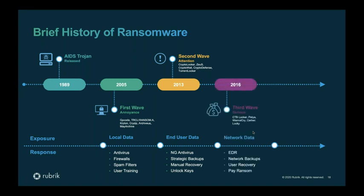As we got into the third wave in the middle of the 2010s, WannaCry and similar threats came into play — more sophisticated distributed encryption leveraging command and control architecture. Endpoint detection and response became key, along with network-based backups and recovery. Unfortunately, we started to see the wave of ransom-paying take off here. That's when criminal enterprises realized this was a legitimate business that they could make money in.